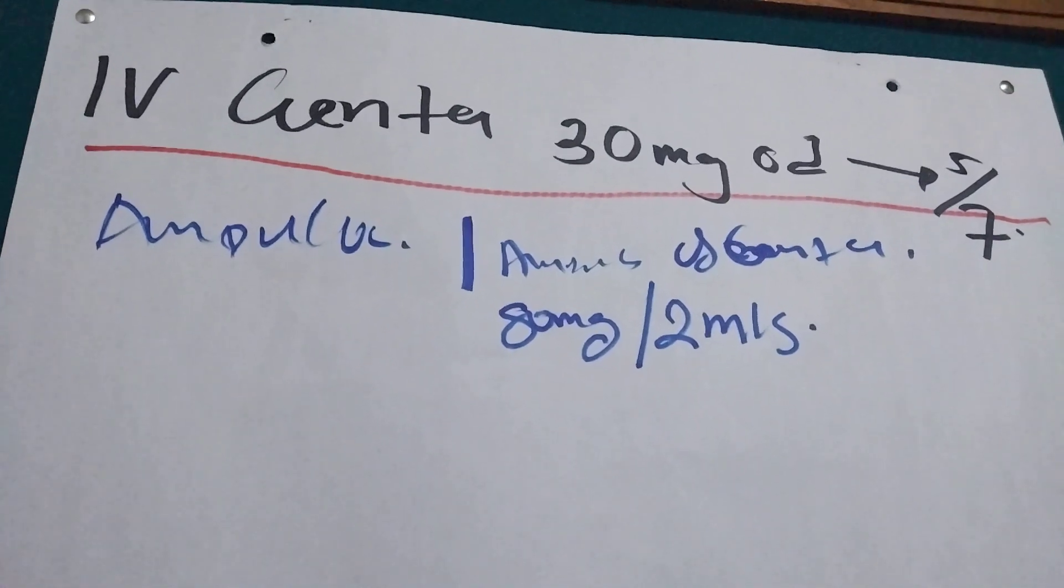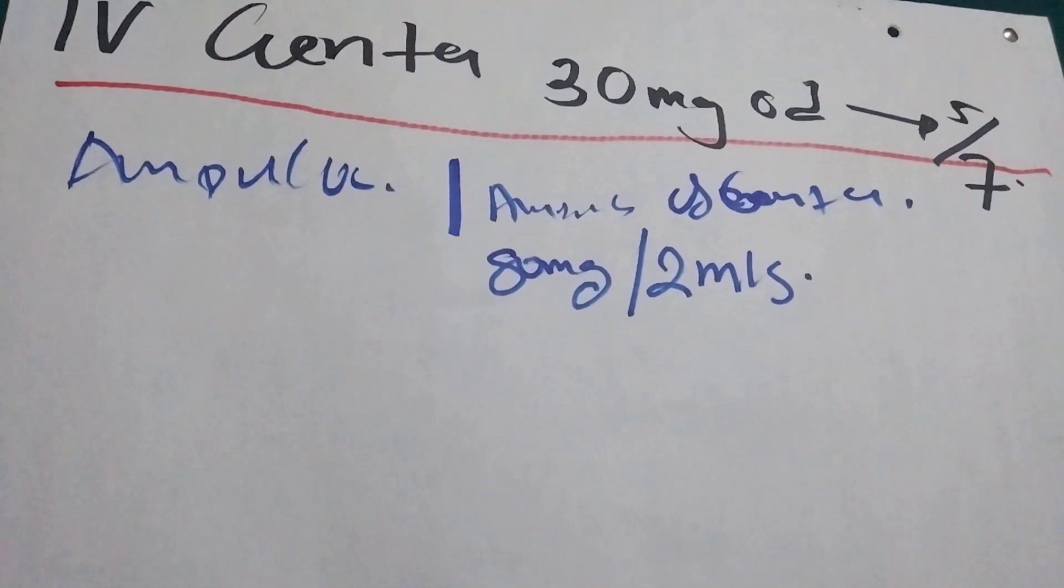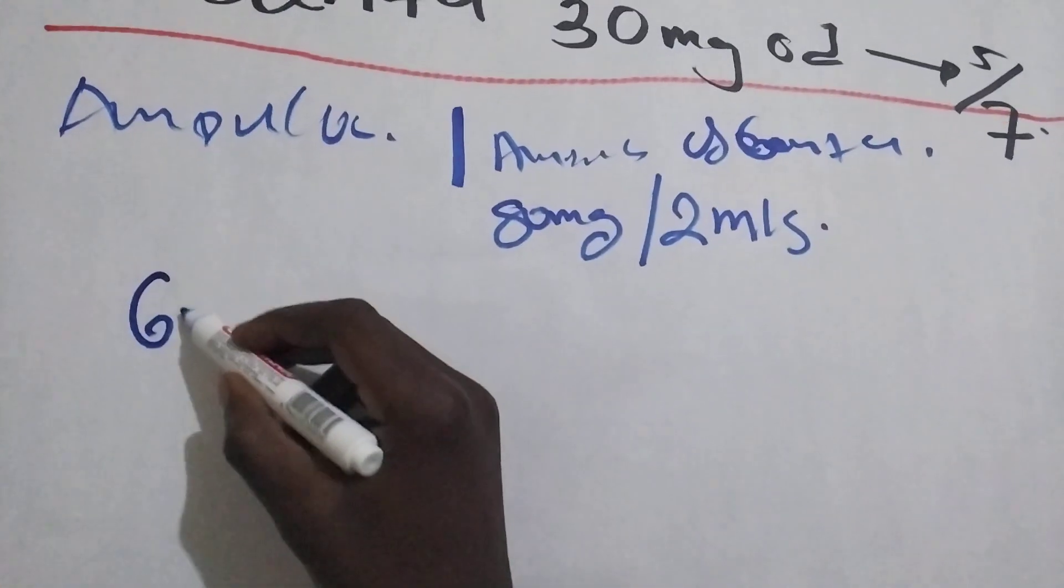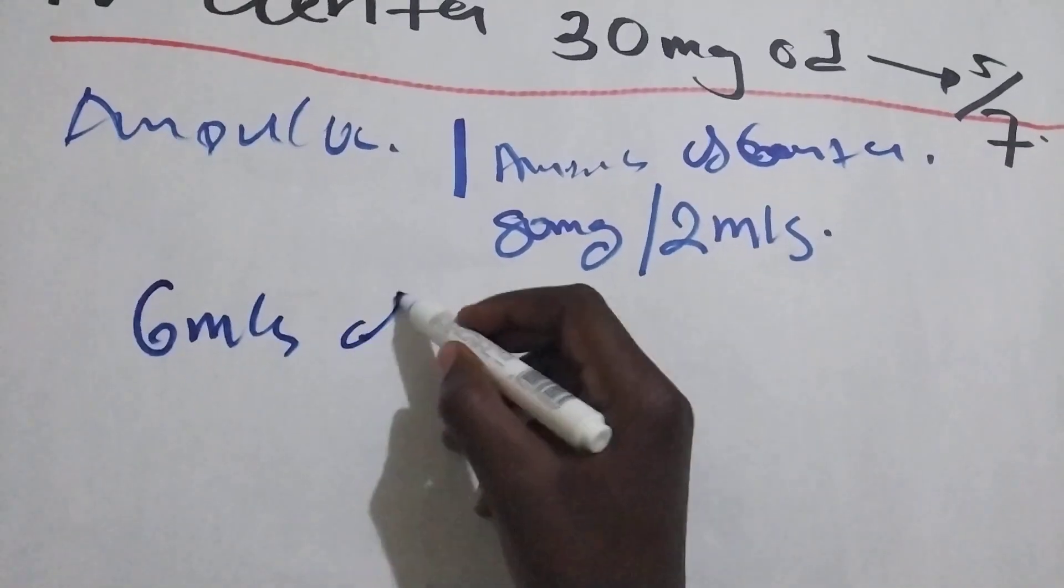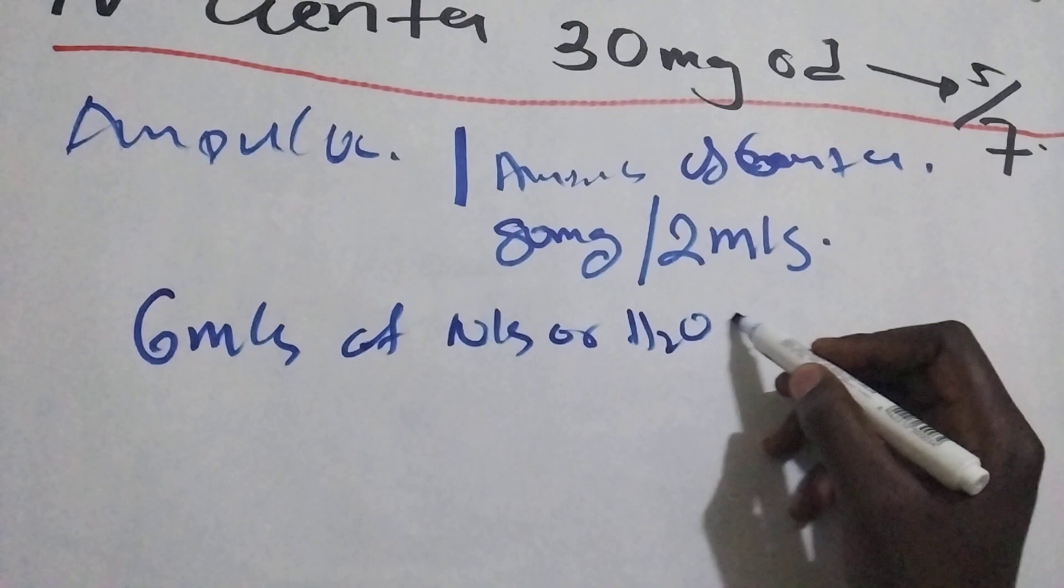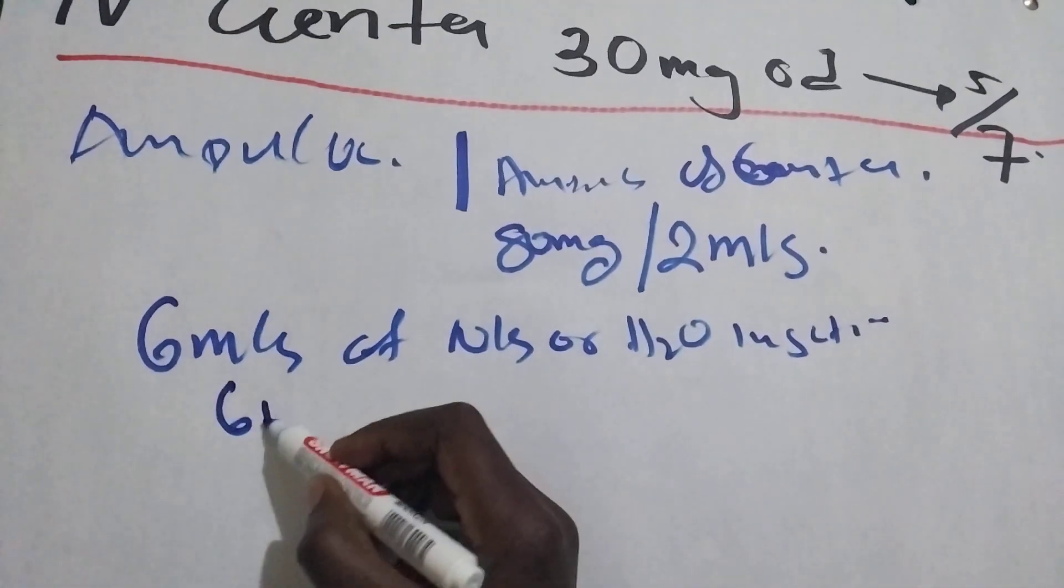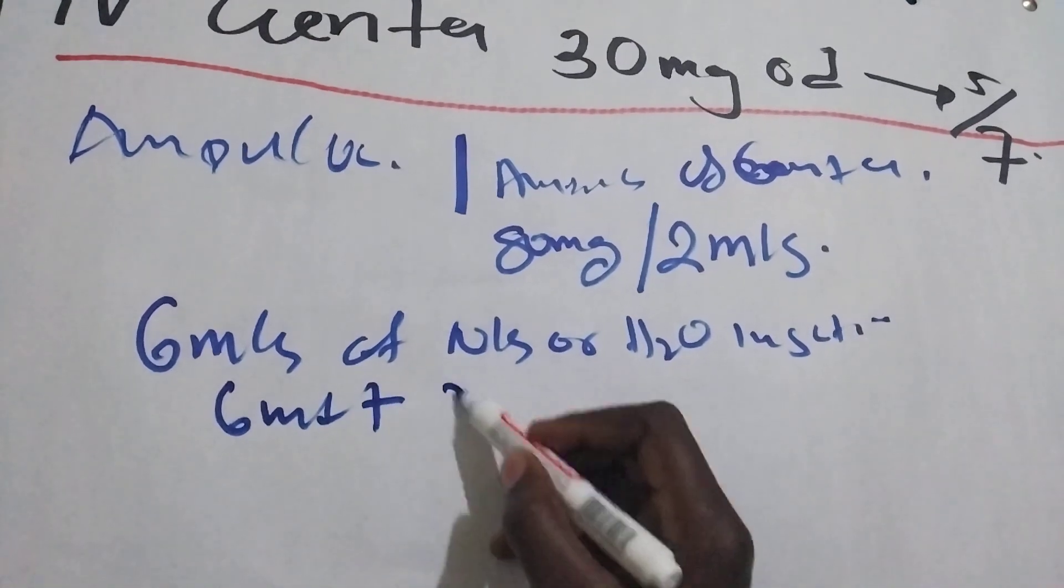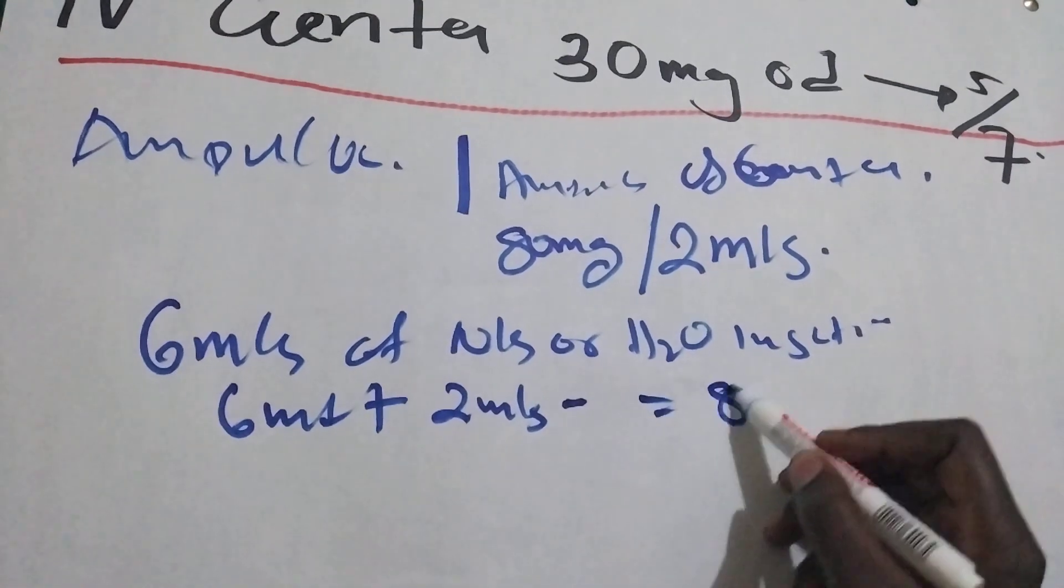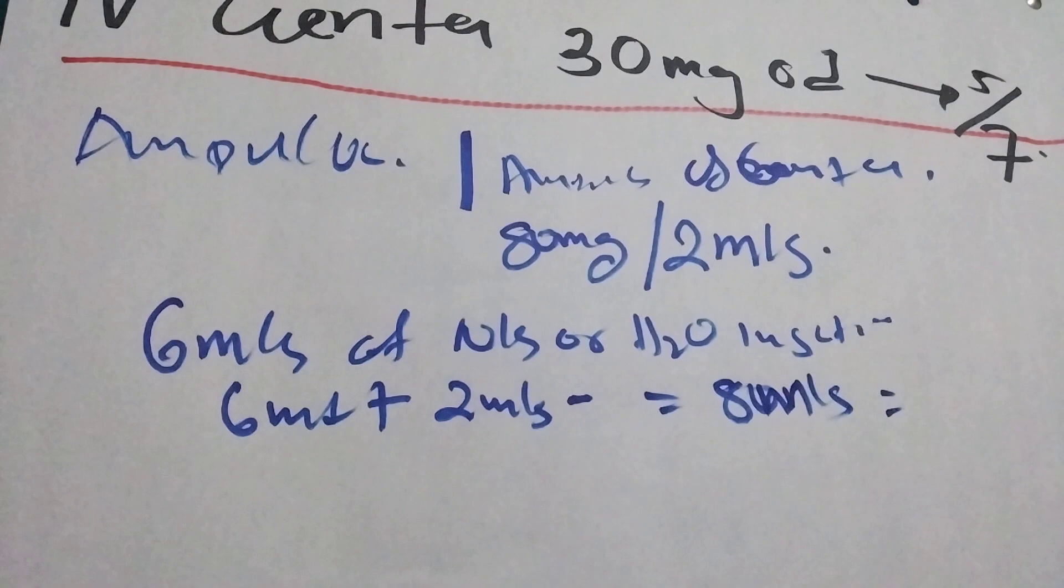So in neonate, what we are going to do, we are going to dilute this drug. We are going to use 6mLs of normal saline or water for injection. So aspirate 6mLs plus 2mLs of gentamicin will give us 8mLs, which means each mL is 10mg.